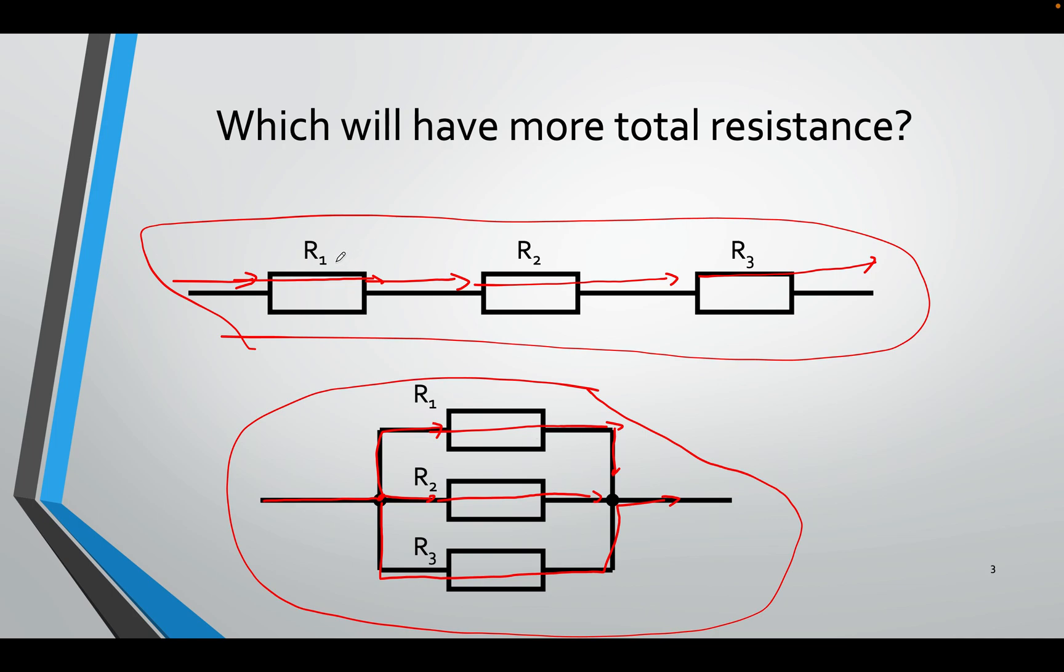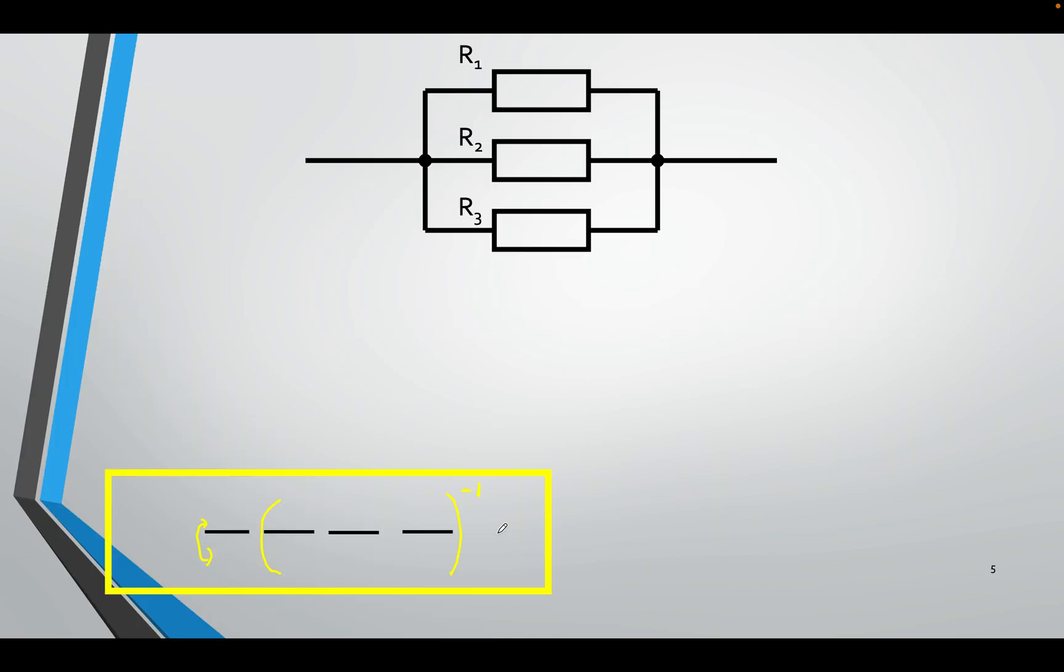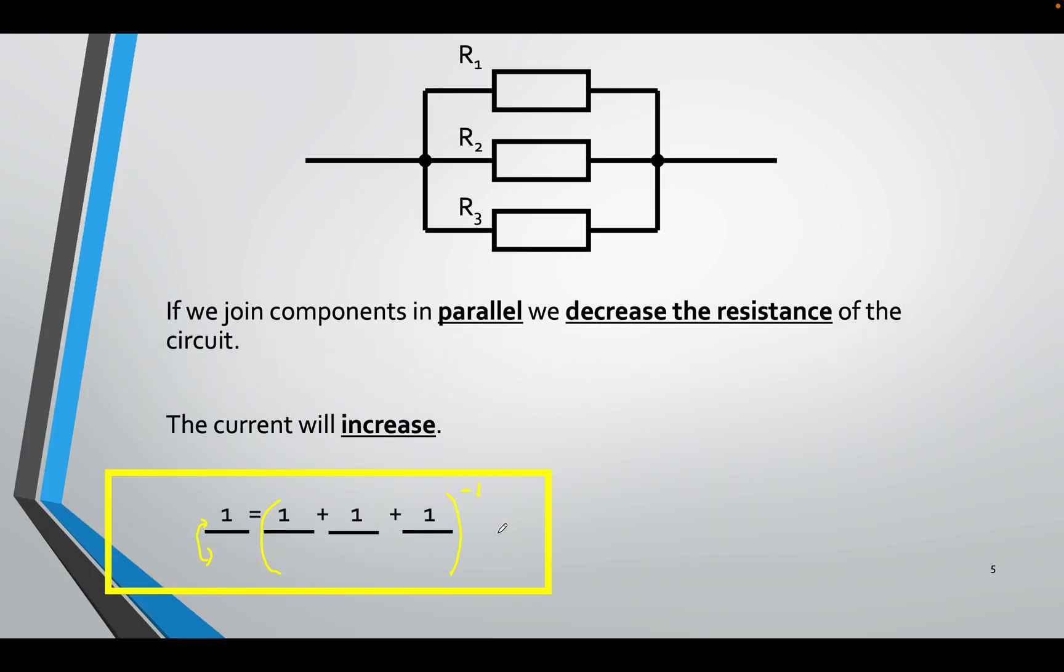We already know you just simply add these. But for this, a way to add them is a little bit different. You will just do the formula 1 over R1 plus 1 over R2 plus 1 over R3, and you put that in a bracket to the power of minus 1. That will actually get you the total resistance.